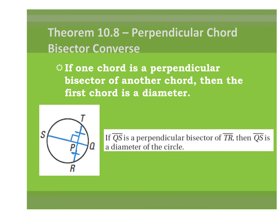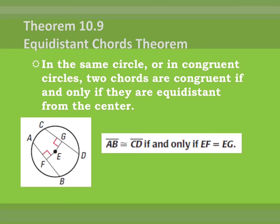The last theorem is called the Equidistant Chords Theorem. This one also has 'if and only if' in it, so it can go either way. In the same circle or in congruent circles, two chords are congruent if and only if they are equidistant from the center. So if EG is congruent to EF — the distances from center to chord — then we know those two chords are also congruent, and you can go either way on that.